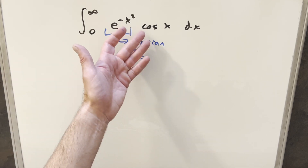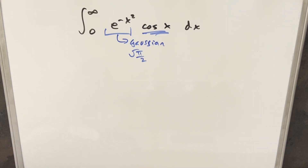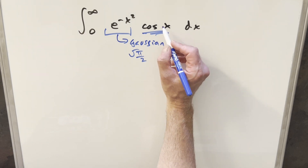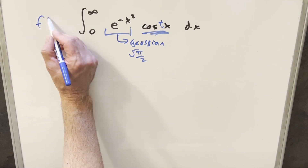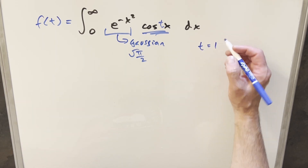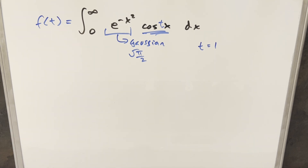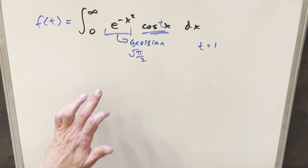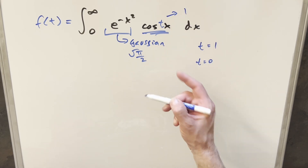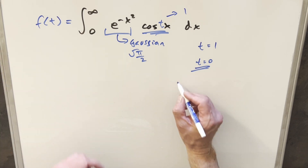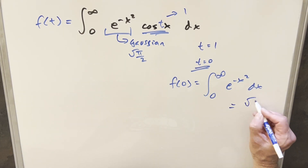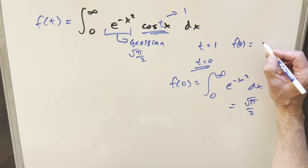It's not like I can just do a u-substitution to make the cosine go away, so the cosine x is the real problem. What I want to try is Feynman's technique — we create a parameter, a second variable, since we're integrating with respect to x. I'll multiply in a t right there and call this whole thing f of t. Setting t equal to 1 means f of 1 is exactly our goal expression. If t equals 0, then cosine of 0 is just 1, so the cosine goes away and f of 0 becomes exactly the Gaussian integral, which equals square root of pi over 2. We'll use this fact later.